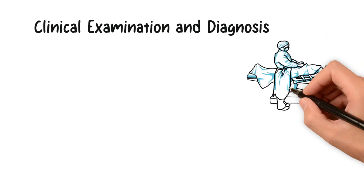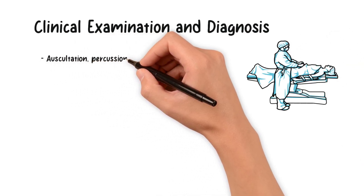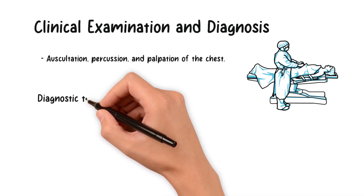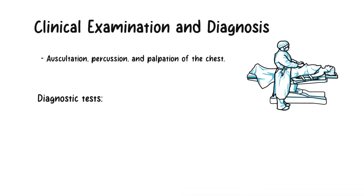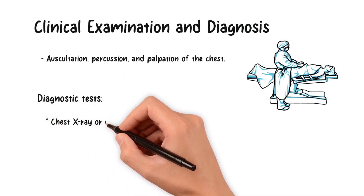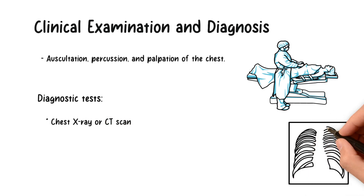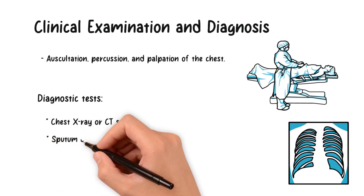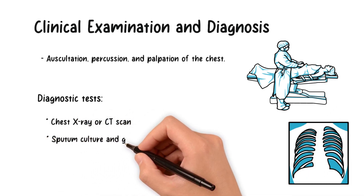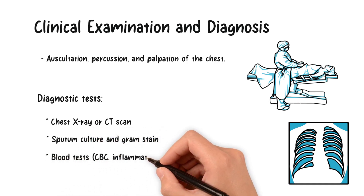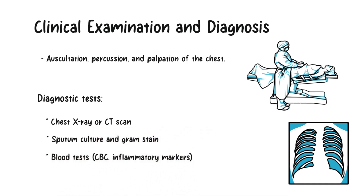A thorough clinical examination and appropriate diagnostic investigations are essential to confirm pneumonia. Clinical examination involves auscultation, percussion, and palpation of the chest to identify abnormal lung sounds and signs of consolidation. Diagnostic investigations may include chest X-ray or CT scan to assess lung involvement and consolidation, sputum culture and Gram stain to identify the causative organism, and blood tests including complete blood count and inflammatory markers.